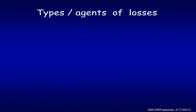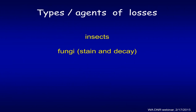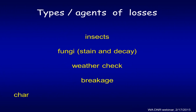What are some of the things we might be looking for after a fire? Well, insects are kind of double agents — they will often kill a weakened tree, but they also act as hosts and bring in stain and decay fungi. Or in boring into the tree, they can create an opening for fungal spores to enter. There are other forms of loss that are time-dependent, like weather check and breakage. And then there are some that occur at the time of fire, like char.